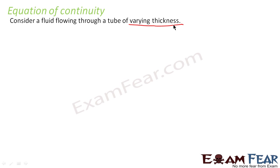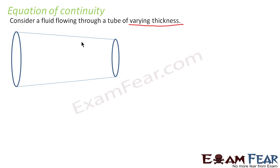Varying thickness means the tube is not uniformly thick everywhere — somewhere it is less thick, somewhere it is even more thick. Let us have a tube somewhat of this sort. If you see, the left end of the tube is thicker when compared to the right end. So let us consider a fluid which is flowing through a tube of this kind.